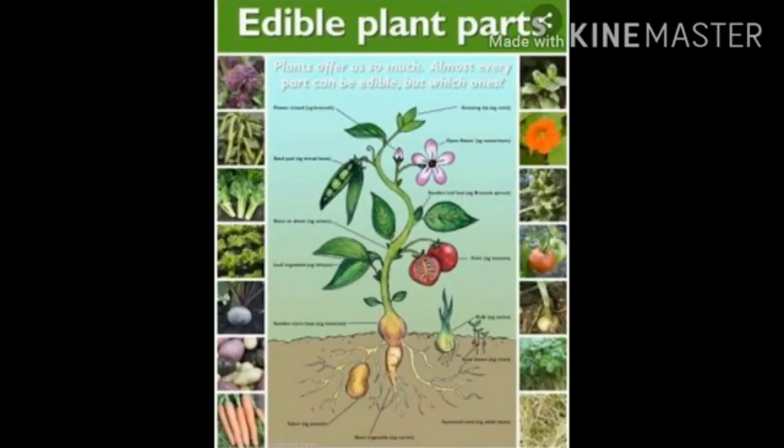The last topic is edible parts of plants — the plant parts which are eatable. Some plants have two or more edible parts. For example, seeds of mustard plants give us oil, and its leaves are used as a vegetable.